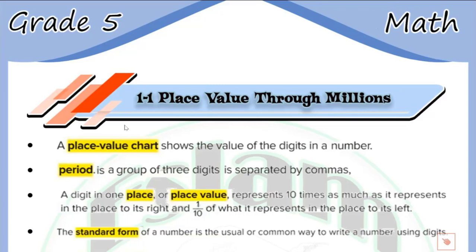Once we need to find the value of a number, suppose we are talking about the digit two. When two lies in the ones place its value is 2. When two lies in the tens place its value is 20. When two lies in the hundreds place it will be 200, and so on.